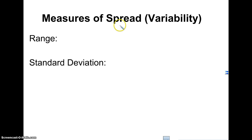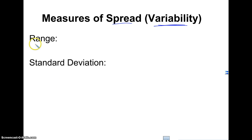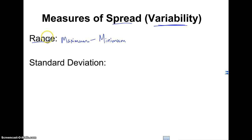When we talk about spread, we're really talking about the variability in the data — how it's changing throughout. Where measures of center look at the middle, spread looks at how far apart the data are. There are two main ways to measure that. The range is the maximum value minus the minimum value. It's not an interval — we don't say the range is between 20 and 3. It's one single number.